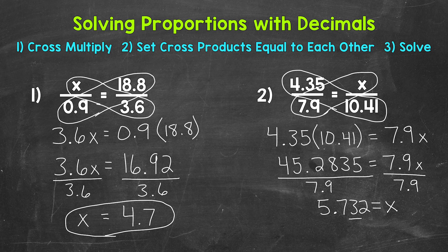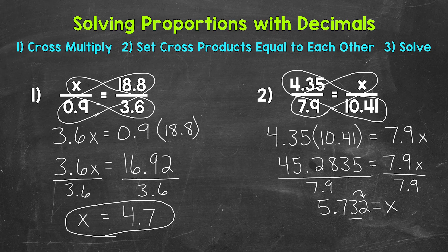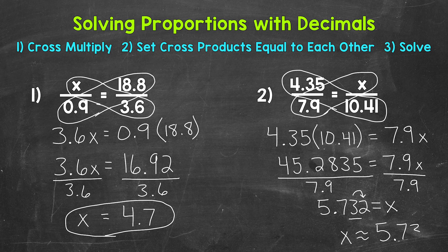We have a 3 in the hundredths with a 2 to the right in the thousandths. That means we keep the digit in the hundredths the same. I'm going to rewrite this with x coming first. x is approximately 5 and 73 hundredths.